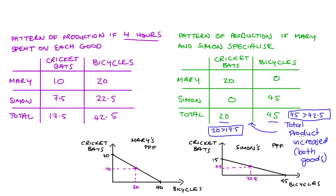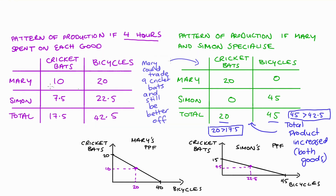Now let's think about a possible trade between Mary and Simon — a trade where both become better off compared to the no-specialization scenario. When Mary wasn't specializing she had 10 cricket bats; she has 20 if she specializes. If she traded nine of those cricket bats, she'd be left with 11, which is greater than 10 — so she could trade nine cricket bats and still be better off. Simon had 22.5 bicycles when he didn't specialize; he has 45 if he specializes. If he keeps 23 bicycles, he'd be better off by 0.5 of a bicycle, leaving him 22 bicycles to trade with Mary. So I propose this trade: Mary trades nine cricket bats for 22 bicycles.